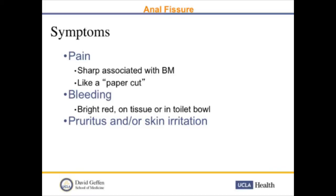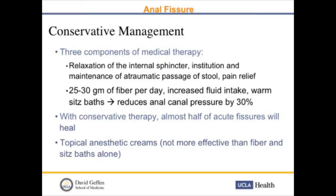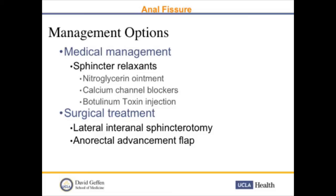The pain is described as a paper cut — sharp pain associated with bowel movements. Patients can see bleeding, and can have pruritus and skin irritation. The three components of medical therapy include relaxation of the internal sphincter, institution and maintenance of atraumatic passage of stool, and pain relief. Fiber is important, and with conservative therapy, almost half of acute fissures will heal. Management options include sphincter relaxants — nitroglycerin, calcium channel blockers, or Botox injection — and surgical treatment including lateral internal sphincterotomy and anorectal advancement flap.